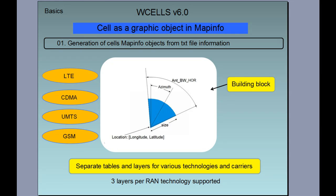Now we'll go through basic features of W cells one by one. For every cell, we generate a graphic object in MapInfo as a representation of that cell's location and orientation. The location in MapInfo is related to longitude and latitude information from the text file. The orientation of the cell is according to azimuth information from the text file, and we can also choose antenna bandwidth, meaning the width of the cell on a map.